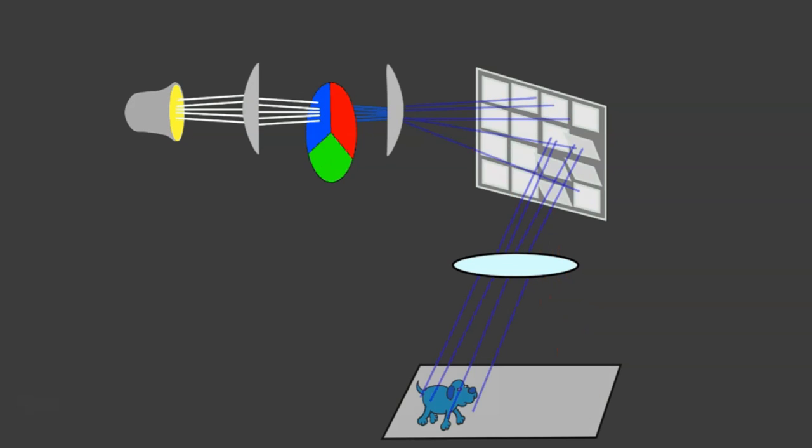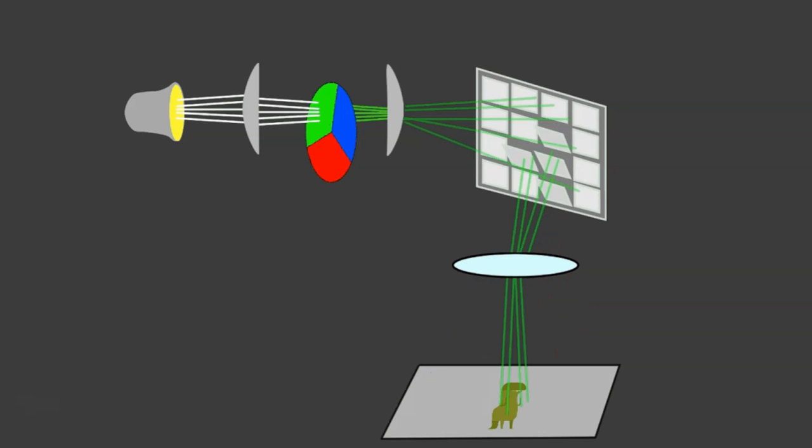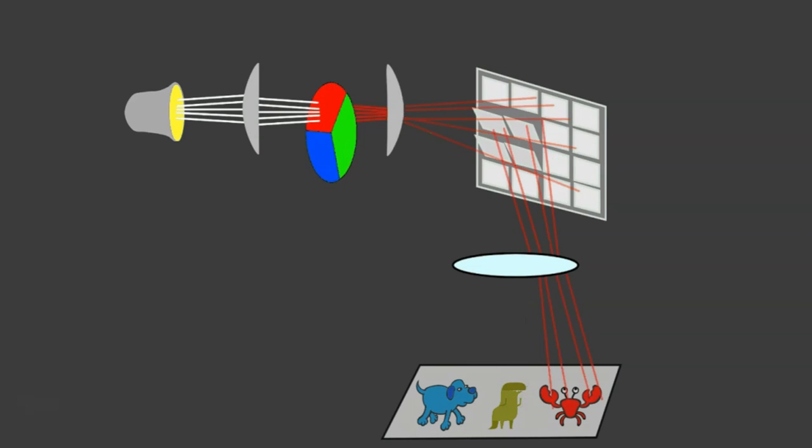...or if it doesn't need it, then it will be tilted at a different angle, and usually that light goes off to a heat sink to absorb the heat, because the lamp will be producing quite a lot of heat.